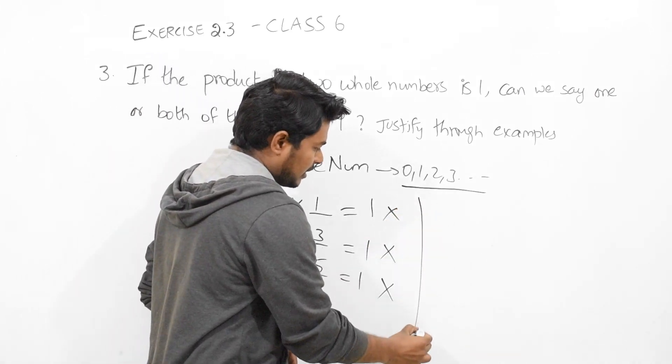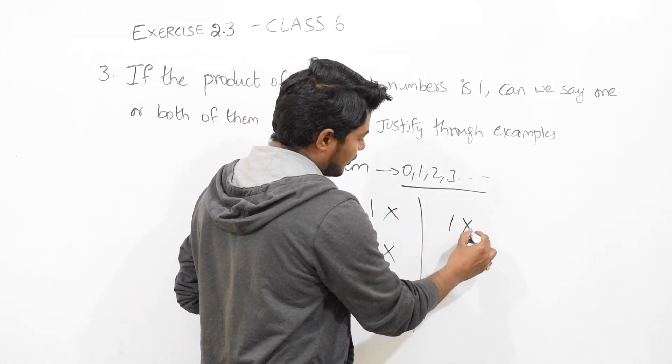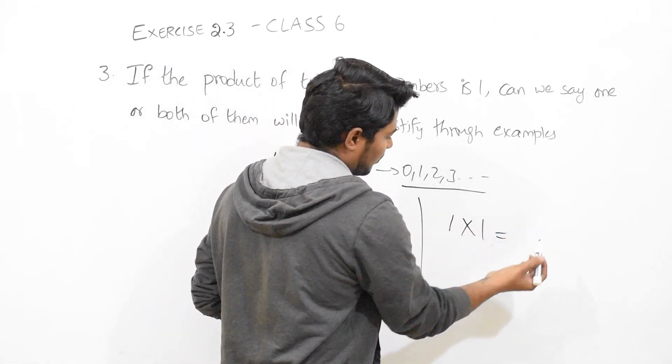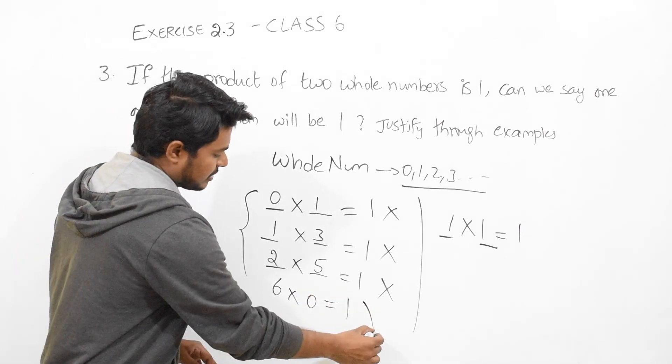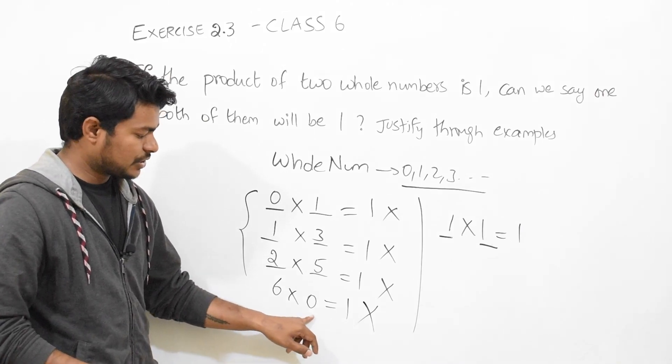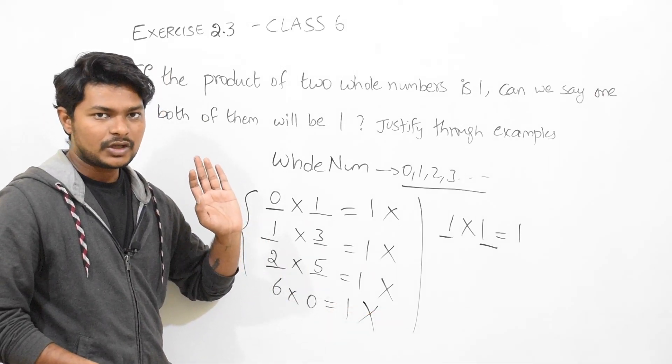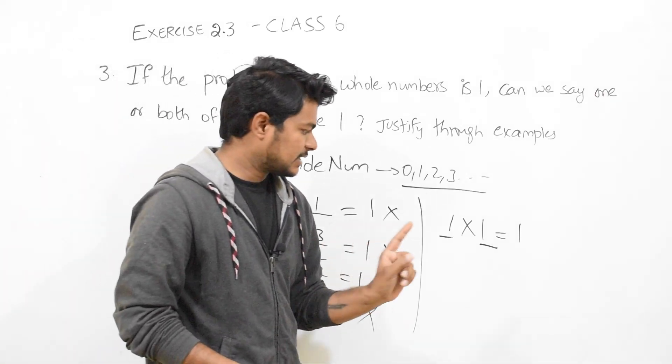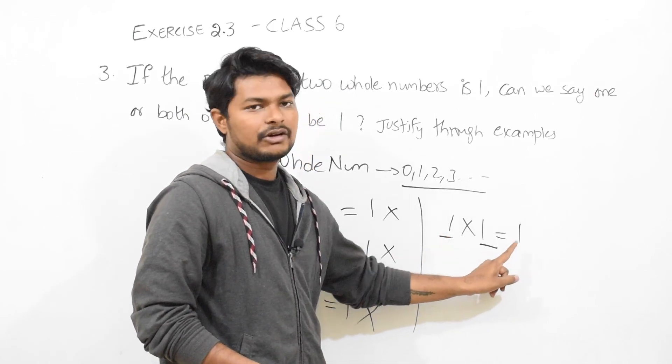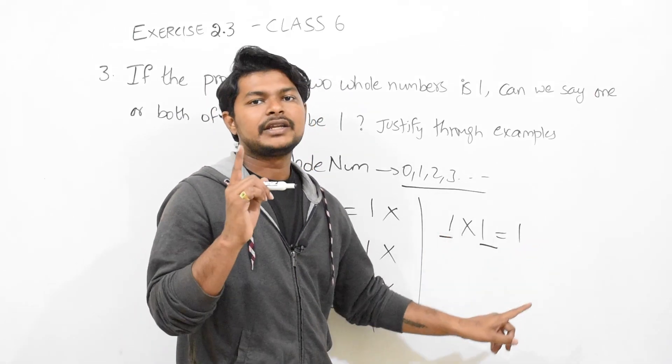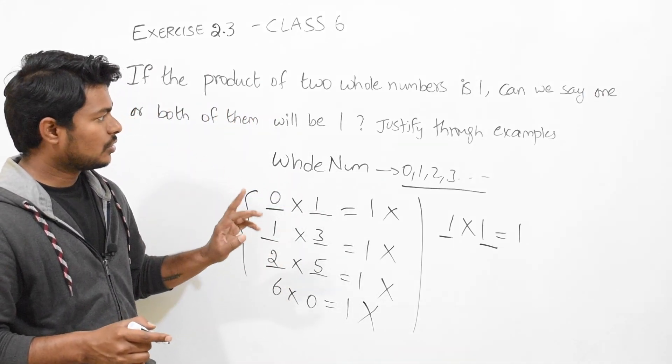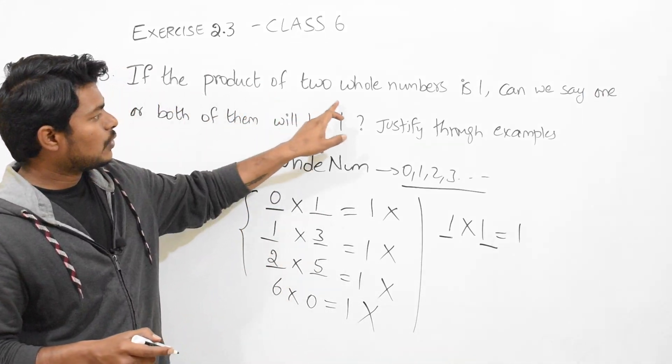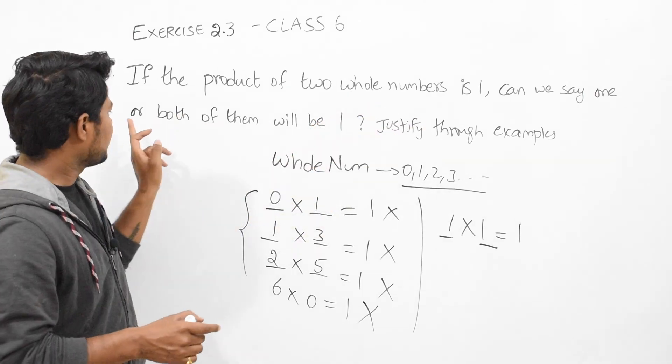We move to another question, the last question. Completely understand, right? Okay, now see the same kind of question. If the product of two whole numbers is 1, can we say one or both of them will be 1? Justify through examples. Again, the concept of whole numbers - it starts with zero and goes on increasing like this: zero, one, two, three, and so on.